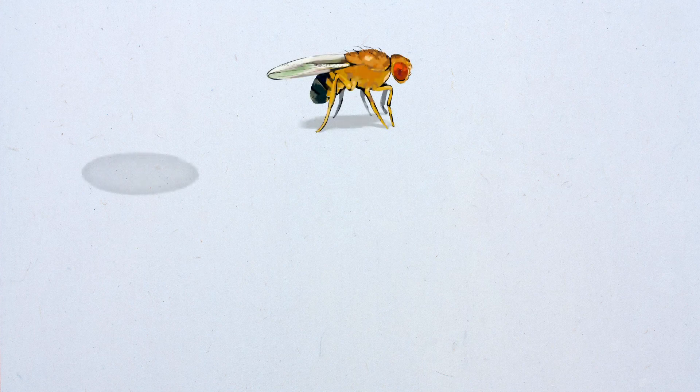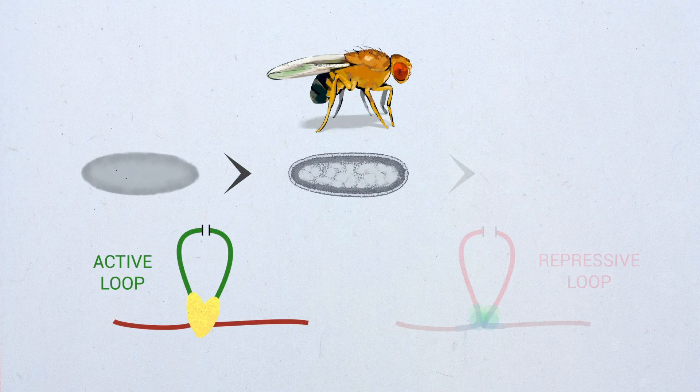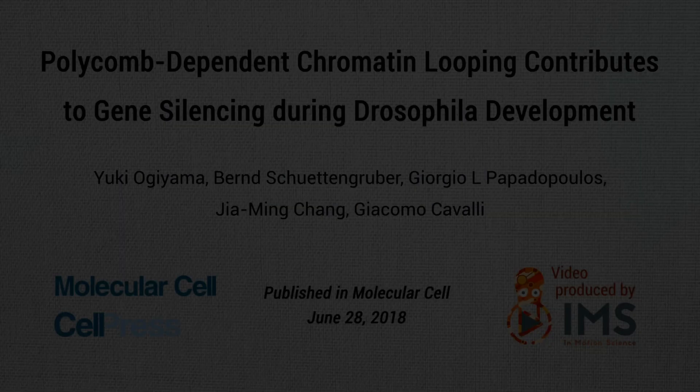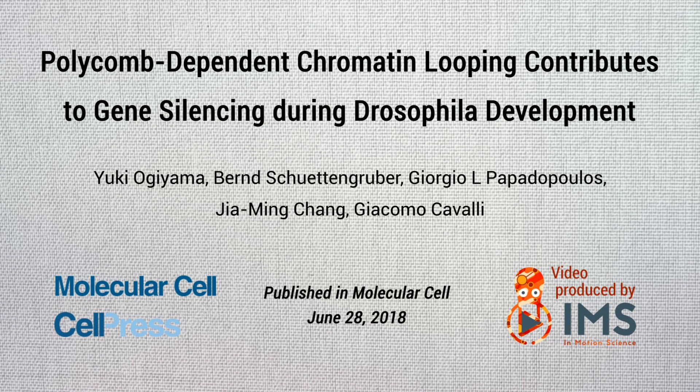Taken together, our results provide fundamental insights into the dynamics of chromatin organization during development and the importance of PRE looping contacts to stabilize gene repression.